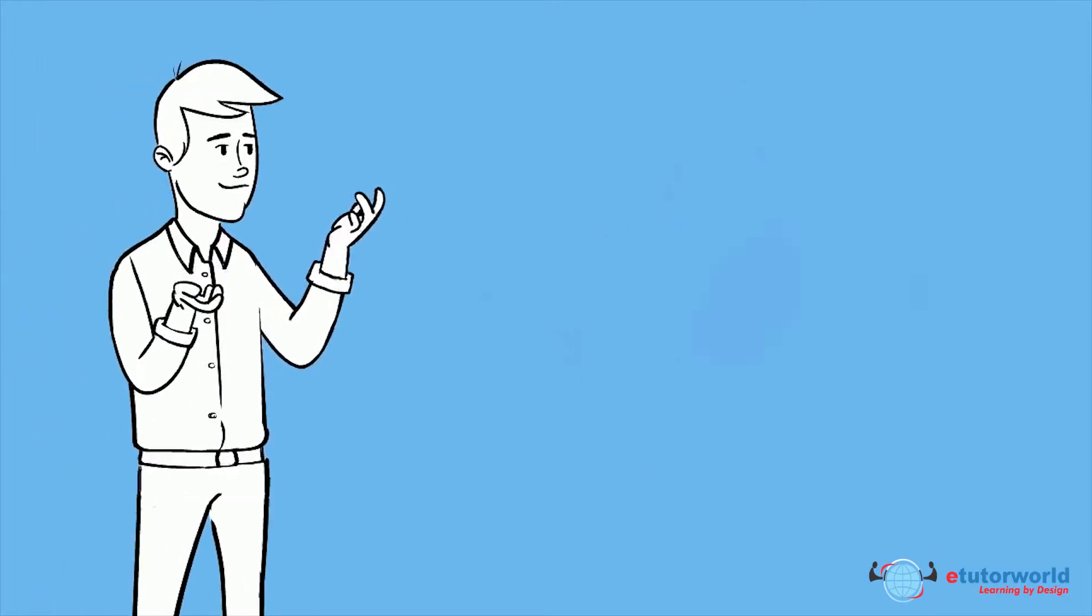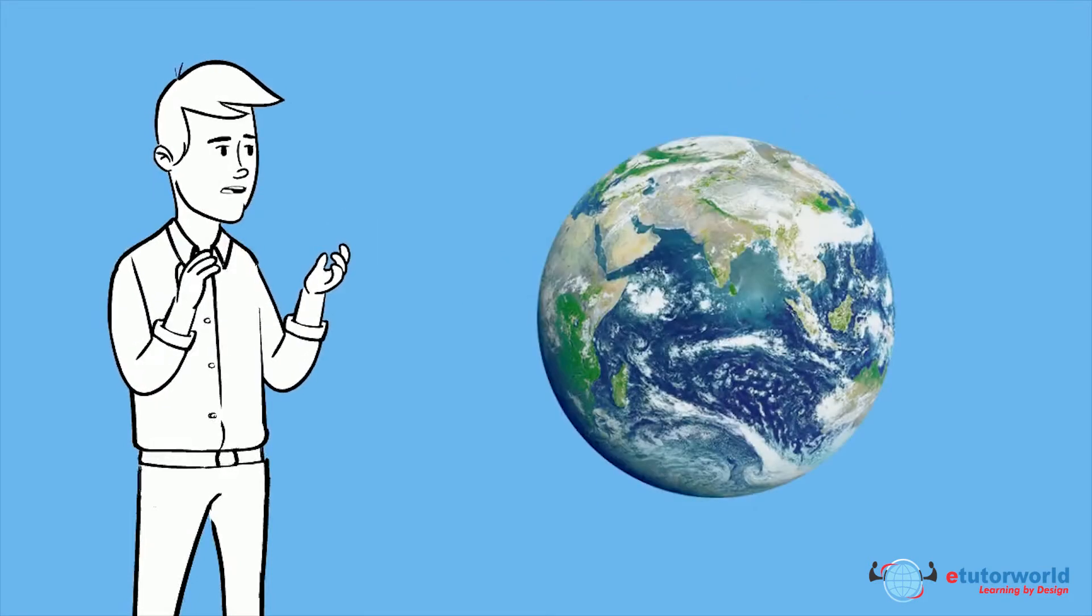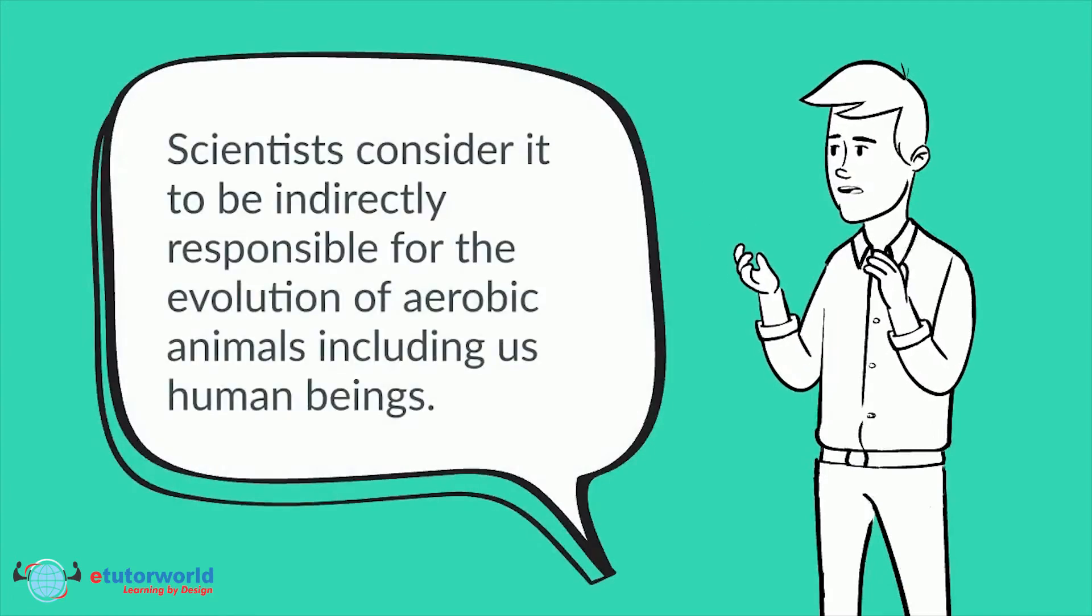This symbiotic process was responsible for the birth of photosynthetic eukaryotes and an oxygenic environment on our planet. Scientists consider it to be indirectly responsible for the evolution of aerobic animals, including us human beings.